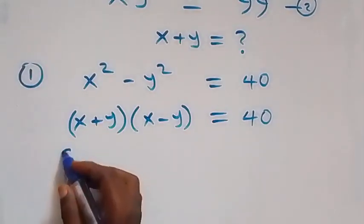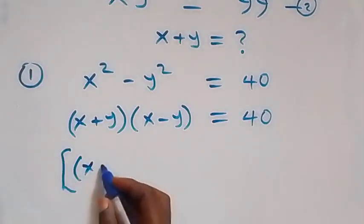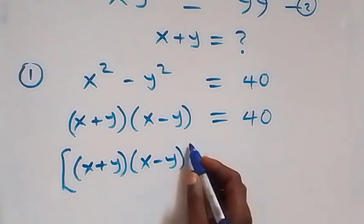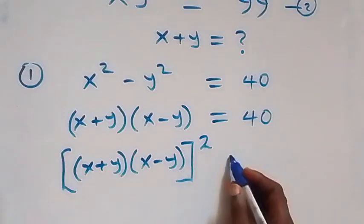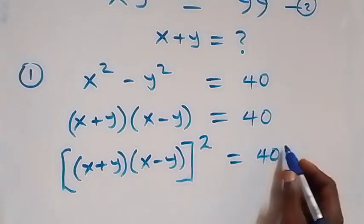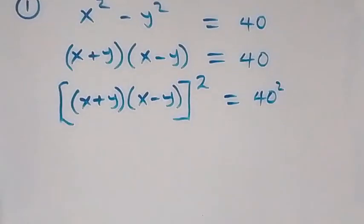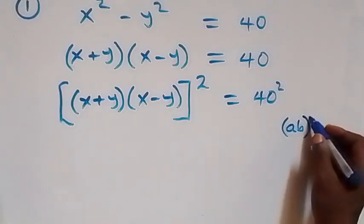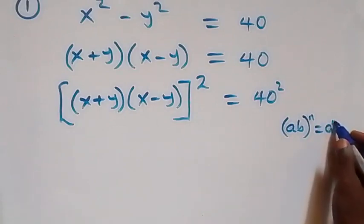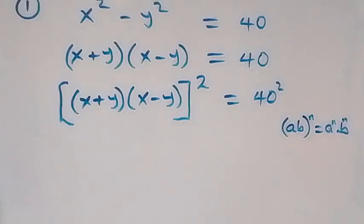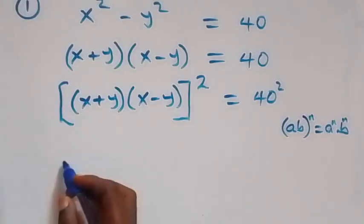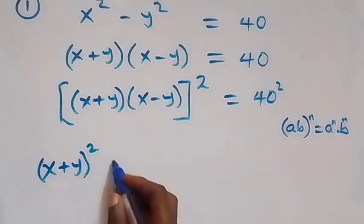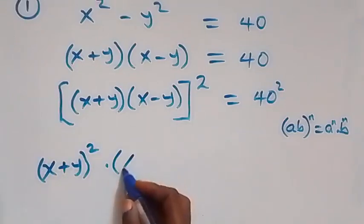So we have x plus y multiplied by x minus y, all squared, equals 40 squared. On the left hand side, this follows from the rule (ab)^n = a^n times b^n, so this can be written as x plus y squared times x minus y squared equals 40 squared.